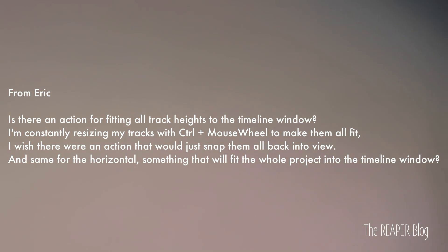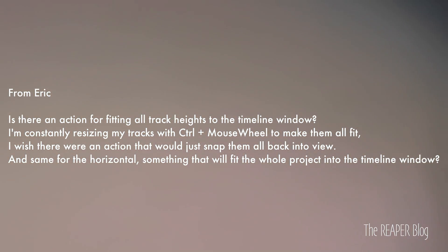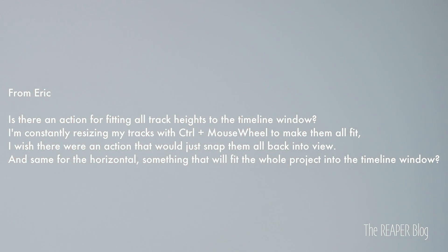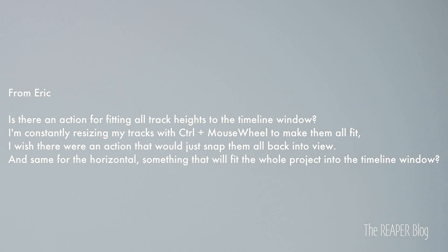Question two is from Eric. Is there an action for fitting all tracks to the timeline window? I'm constantly resizing my tracks with Control and mouse wheel to make them all fit. I wish there was an action that would just snap them all back into view, and the same for the horizontal — something that fits the whole project into the timeline window. The closest thing to get all your tracks to fit onto the TCP is to use Toggle Track Zoom to Minimum Height, and for horizontal you want the View Zoom Out Project action. The best way is to combine those two into a custom action, hit one button, and it shrinks all your tracks and zooms out your session.